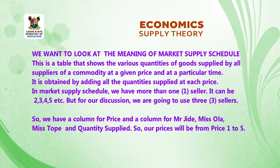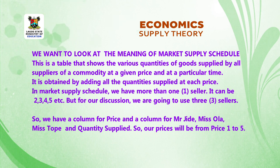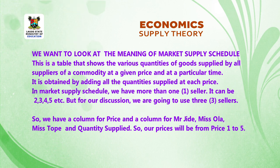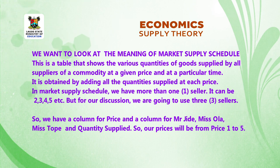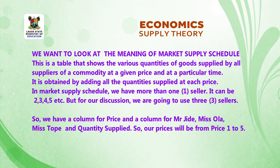In a market supply schedule, we have more than one seller — it can be two, three, four, or five. For our discussion, we are going to use three sellers. We have a column for price, a column for Mr. Jide, Miss Ola, Miss Stopper, and total quantity supplied. Our prices will be from price one to five.